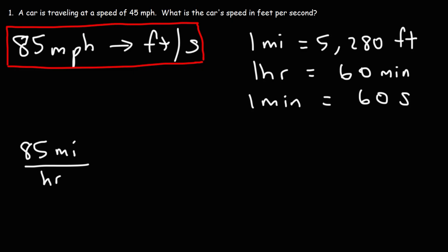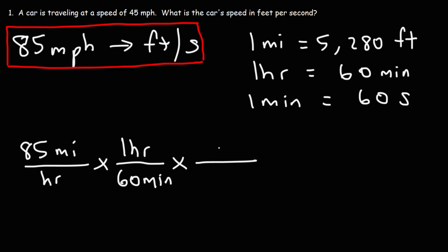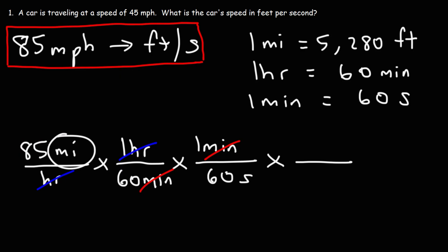We can follow the exact same process as the last problem, or we could change it up — it doesn't matter, the answer will still be the same. Let's do it slightly differently and convert hours to minutes first: one hour is equal to 60 minutes. Then convert minutes to seconds: one minute is equivalent to 60 seconds. We can cross out hours and minutes. Now let's convert miles to feet — miles is on top, so we put it on the bottom, and 5,280 feet goes in the numerator. Now we can cross out the unit miles.